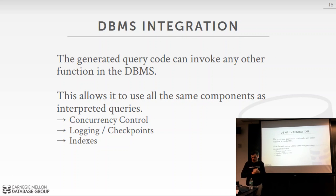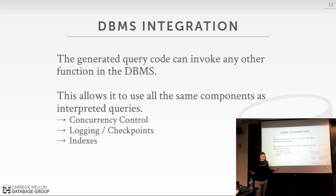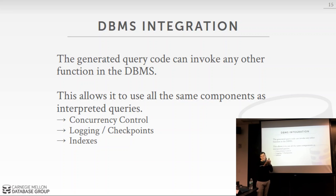A nice advantage of this approach is that your generated code can interact with any other part of your database management system. If you want to invoke a function in an index or the transaction manager, you can easily generate code that invokes them directly. It also makes debugging easier: you have C code, you crash, you open GDB and figure out why. You can add debug symbols to track which line in the generated code was produced by which line in your code generation logic.